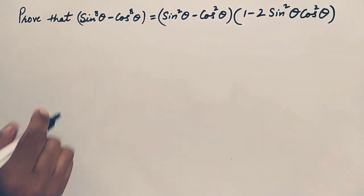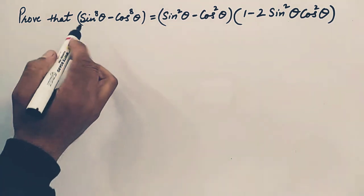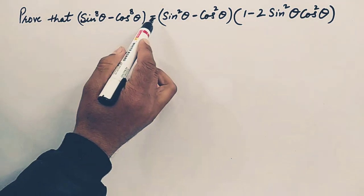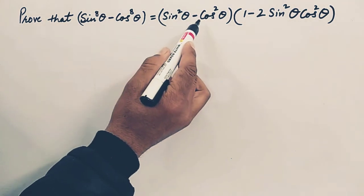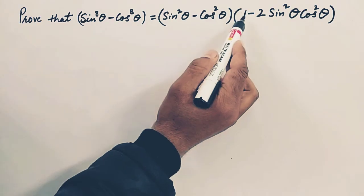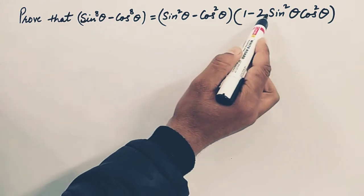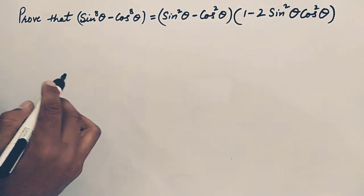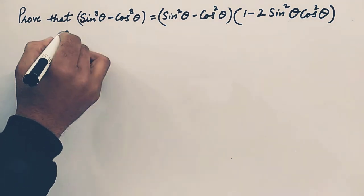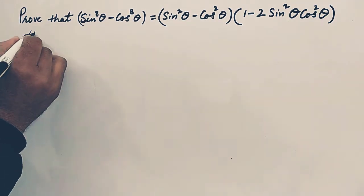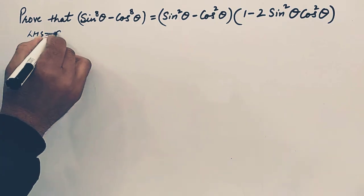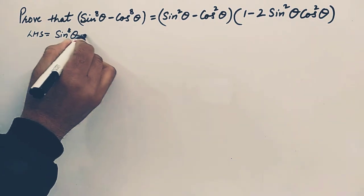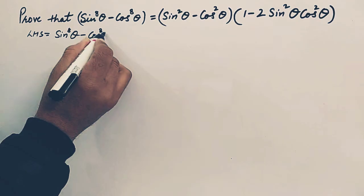Let's prove this identity. Prove that sin⁸θ minus cos⁸θ is equal to (sin²θ minus cos²θ) into (1 minus 2sin²θcos²θ). For proving this identity we'll start from the left hand side. So left hand side is sin⁸θ minus cos⁸θ.